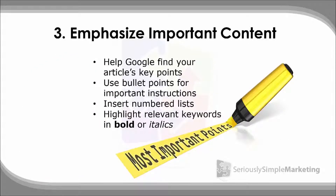Next, let's talk about emphasizing important content. When covering the top 10 breakfast foods, make sure you're highlighting key aspects. You can use bullet points, numbered lists, the highlighter, italics, or bold text. Google's robots, as they scroll through content to understand what it's about, notice when you put emphasis on certain points. It's not a magic ranking trick on its own, but it's one of hundreds of factors Google considers — and it's one of the easiest to take advantage of.